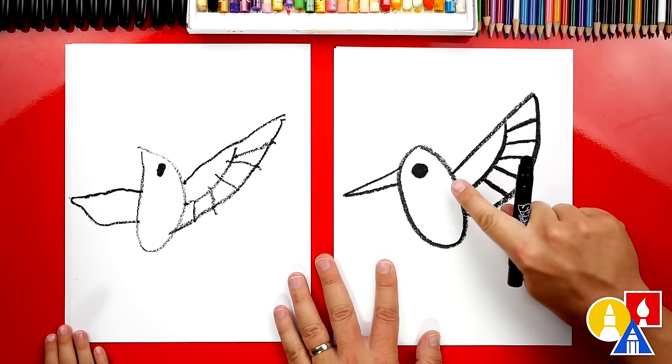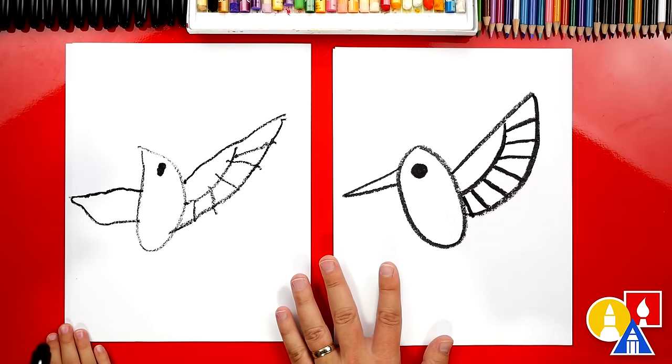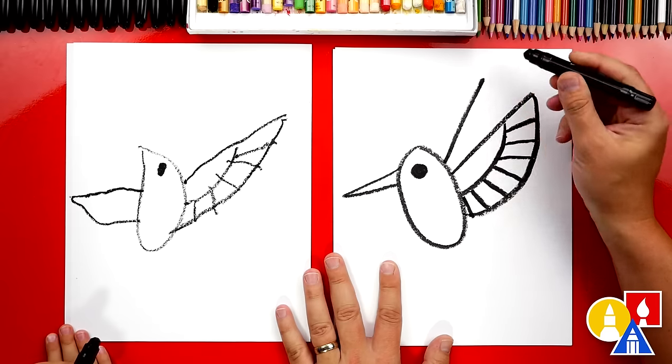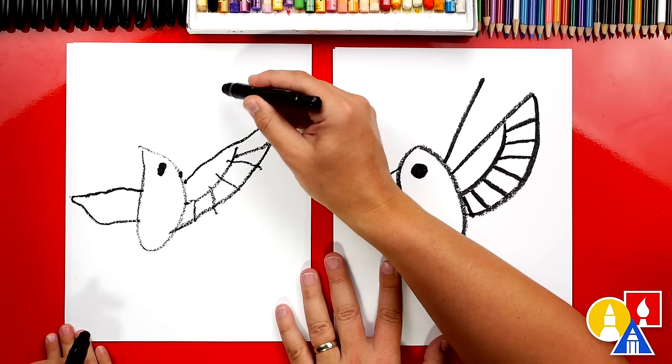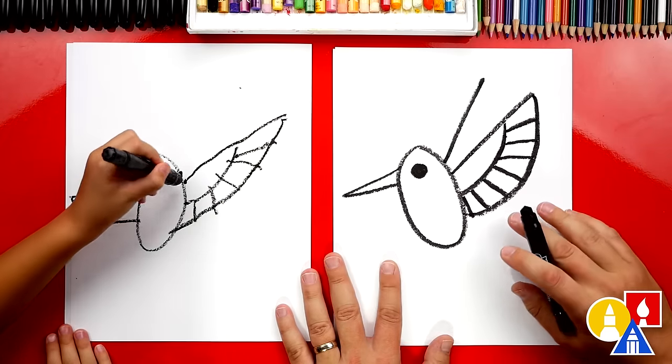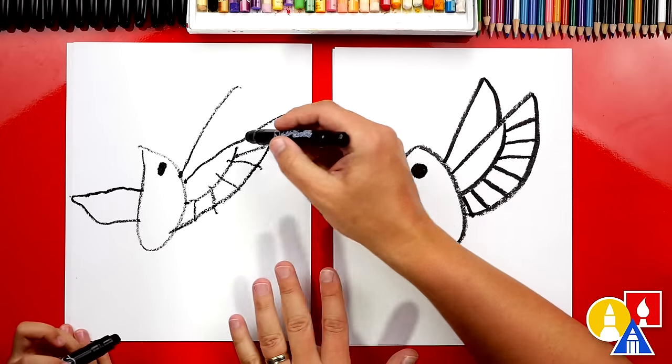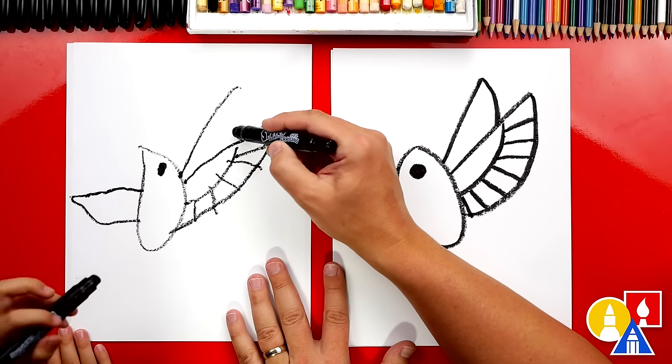Do hummingbirds have one wing or two wings? Two wings. Let's draw the other one but we're only gonna draw part of it. So we're gonna draw it coming up. We'll start here and come up to there. Yeah, and then we're gonna curve back down but we're gonna stop when we hit the wing. So curve back down.